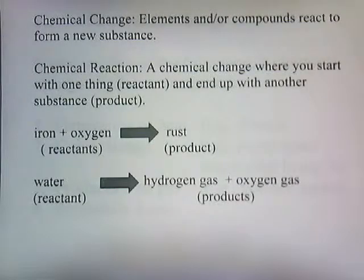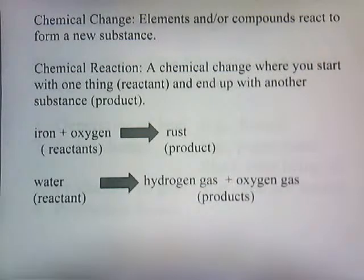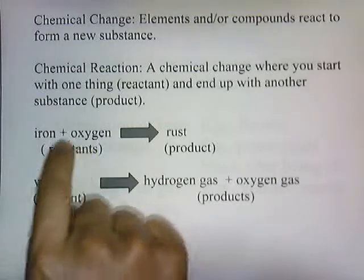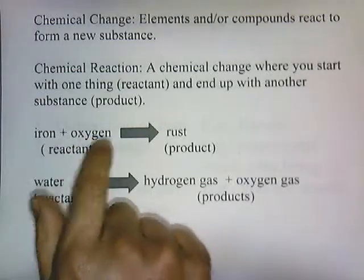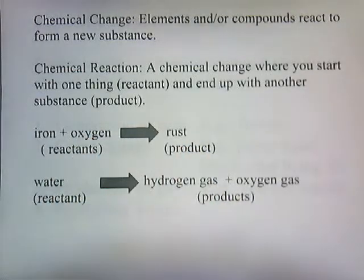A chemical change is where elements or compounds react to form a new substance. In a chemical reaction, you start with reactants and end up with a product. For example, if you take a nail made of iron and leave it outside, it will react with the oxygen in the air, and the iron and oxygen combine to form that orange stuff called rust.